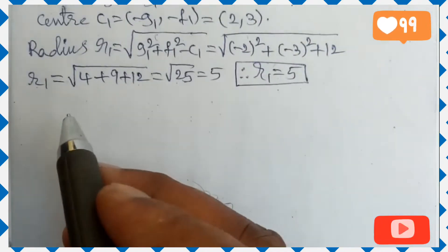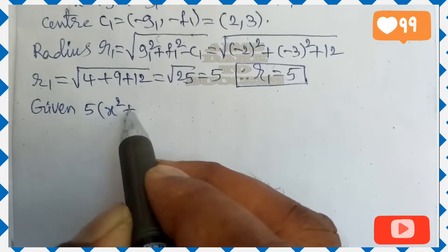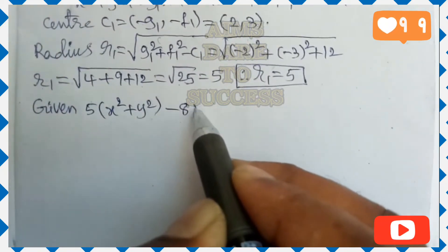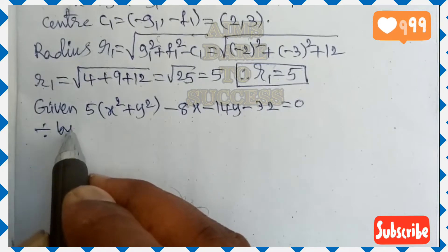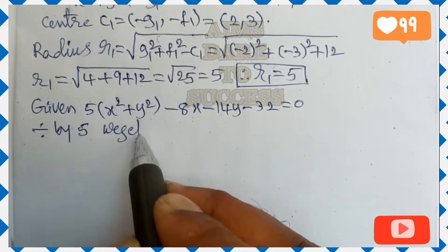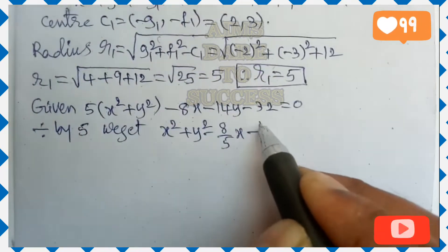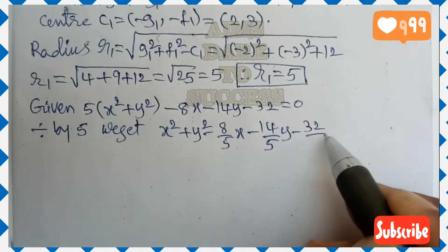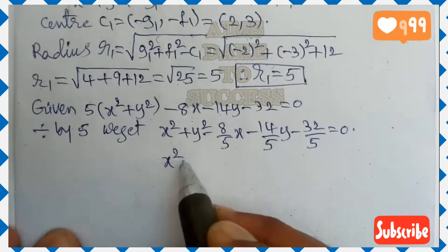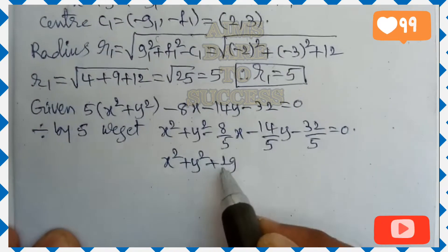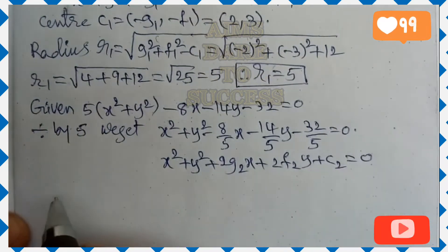Next, the second circle is 5(x² + y²) − 8x − 14y − 32 = 0. The x² and y² coefficient is not 1, so divide by 5. We get x² + y² − (8/5)x − (14/5)y − 32/5 = 0. The standard equation of a circle requires x² and y² coefficient to be 1, which is why we divide by 5. Comparing with x² + y² + 2g₂x + 2f₂y + c₂ = 0.